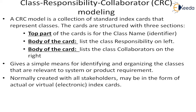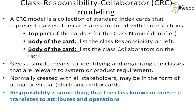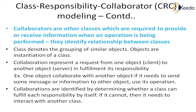It may be an actual meeting with physical cards, or sometimes electronic or virtual. Responsibility is something that the class knows or does — it translates to attributes and operations. Collaborators are other classes which are required to provide or receive information when an operation is being performed. When one class's operation is being performed and it needs to interact with another class, that other class is called a collaborator.